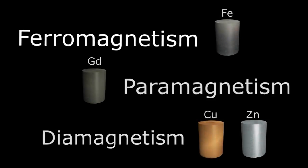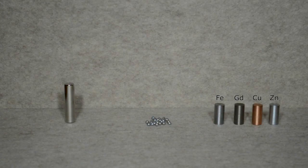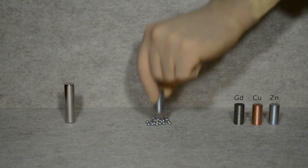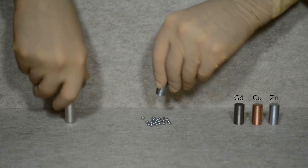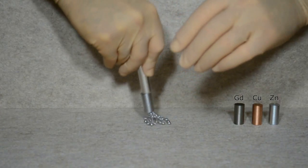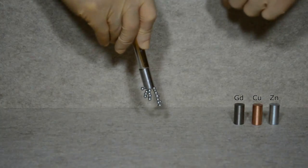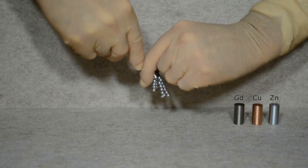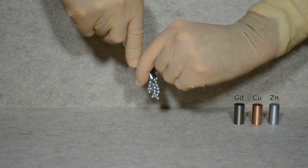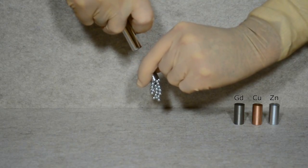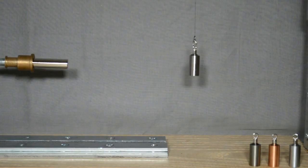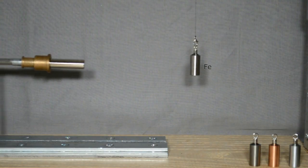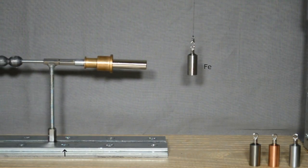We are all most familiar with ferromagnetism, the strongest of the three mentioned magnetic forces. When connected to a strong magnet, the iron itself becomes strongly magnetic and picks up all the steel BBs. In fact, the iron cylinder doesn't even have to have direct contact with the fixed magnet — it just needs to be in the magnetic field to remain strongly magnetic.